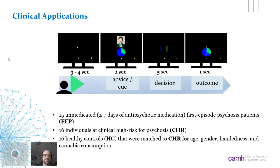This is data collected in Basel: 15 unmedicated first-episode patients, where unmedicated was defined as at most seven days of antipsychotic medication; 16 individuals at clinical high risk for psychosis; and 16 healthy controls matched for age, gender, handedness, and cannabis consumption.